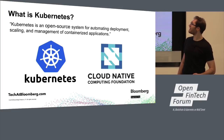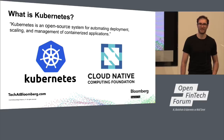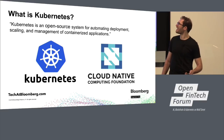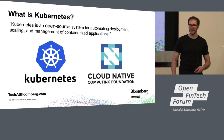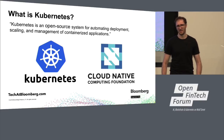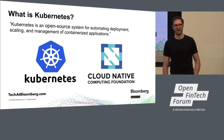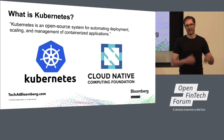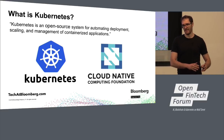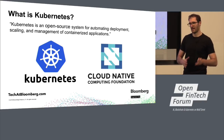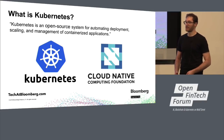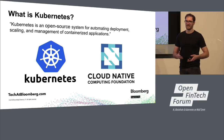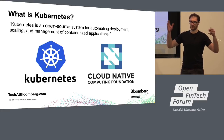Starting with the obligatory Kubernetes definition: Kubernetes is an open source system for automating deployment, scaling, and management of containerized applications. What I want you to take away is that Kubernetes is really good at letting application developers work on their applications and deploy their software without having to think about infrastructure — by putting their application into a container, like a zipped application, which they can ship into the cloud.